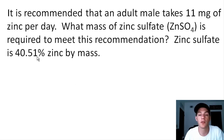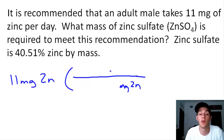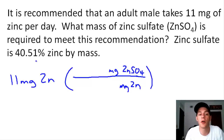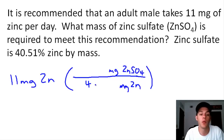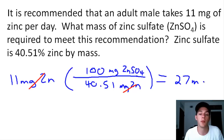We need to use mass percent composition as a conversion factor to convert from the mass of zinc to the mass of zinc sulfate. We start with 11 milligrams of zinc. In our conversion factor, we put milligrams of zinc on the bottom and milligrams of zinc sulfate on top. Since the composition is 40.51%, we have a 40.51 to 100 ratio, so 40.51 milligrams goes on the bottom and 100 milligrams on top. Milligrams of zinc cancel, and our final answer is 27 milligrams of zinc sulfate.